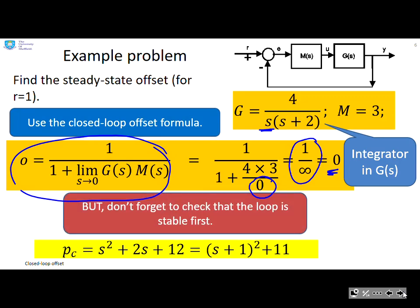Again, though, I must check that the loop is stable first. So here's the closed loop pole polynomial, S squared plus 2S plus 12. I can expand that out. I can see it's got complex roots. But those complex roots are in the left half plane. So I'm stable.